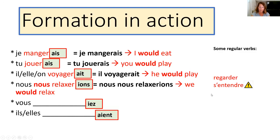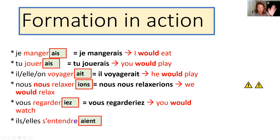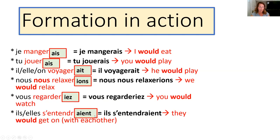For 'vous', there's no reflexive pronoun to worry about — just stick it in front of the ending: 'vous regarderiez' — you would watch. Then 's'entendre' has two warning signs: it's reflexive, so we need the right reflexive pronoun for 'they', which is still 'se'. It also ends in RE, so we must remove the E first so the AIENT ending can hook on. The result is 'ils s'entendraient' — they would get on with each other.